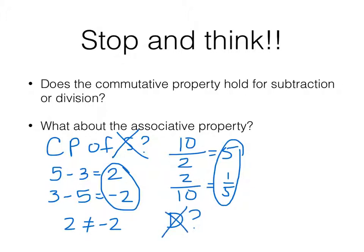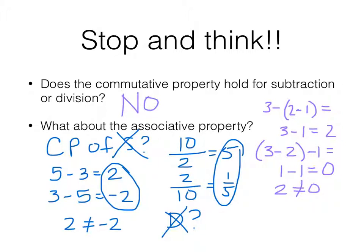For the associative property, it takes a little bit more to show it, but let's do that real quick. So 3 minus the quantity 2 minus 1. What is that? Well, 2 minus 1 is 1, so this is 3 minus 1, which is 2. Let's regroup it. Is that the same? Well, 3 minus 2 is 1. Minus 1 is 0. 2 does not equal 0. So at this point, I think we probably recognize that no would be the big fat answer here. No, these properties do not work for subtraction or division.